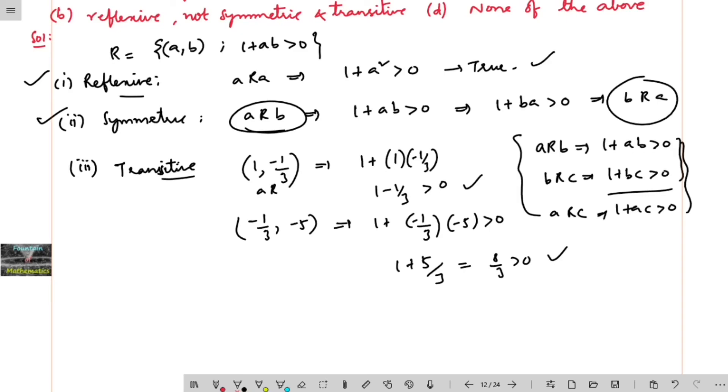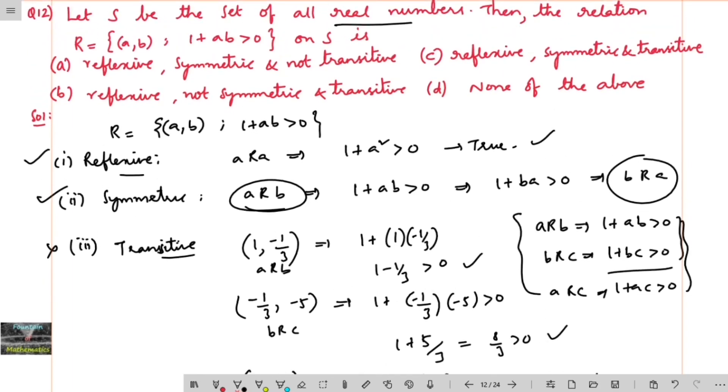If a is related to b and b is related to c, now we will check 1 and minus 5. Now 1 and minus 5, if I can check here, 1 plus 1 into minus 5, which is equal to 1 minus 5 is less than 0. So it is not satisfying. And hence we can say this is not transitive. With one example we can prove it is not transitive.